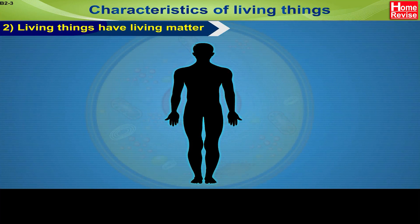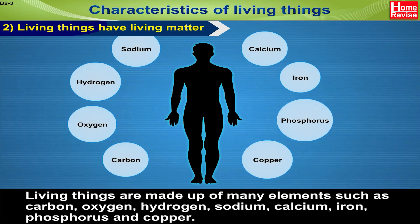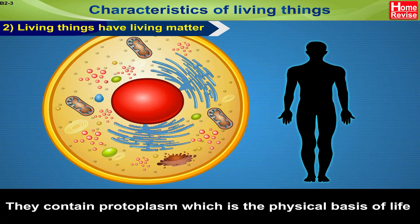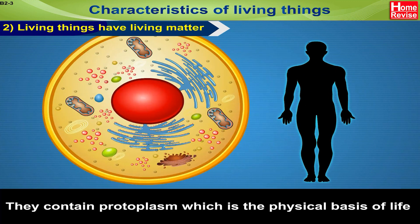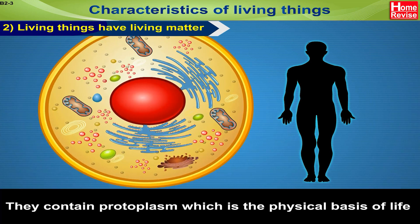Living things have living matter. Living things are made up of many elements such as carbon, oxygen, hydrogen, sodium, calcium, iron, phosphorus and copper. They contain protoplasm, which is the physical basis of life.